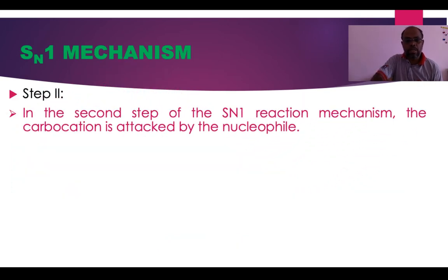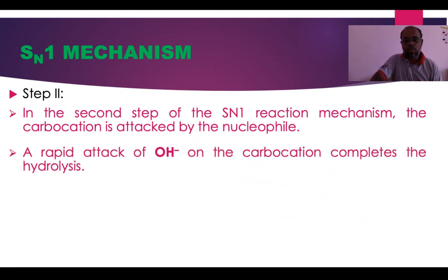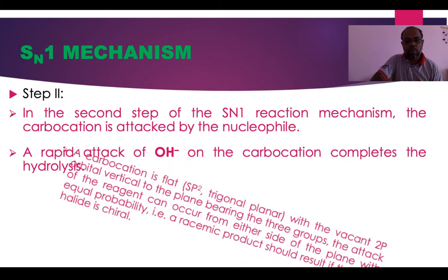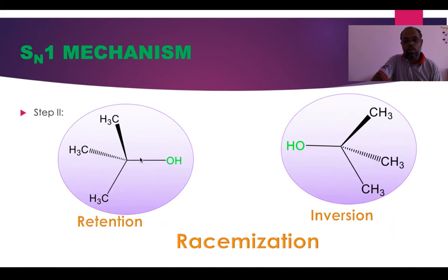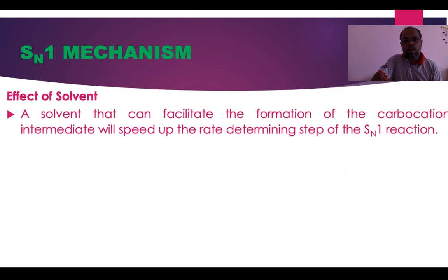After formation of the carbocation, it is attacked by the nucleophile. The hydroxide (OH⁻) nucleophile attacks the carbocation on both sides of the planar carbocation. The carbocation is trigonal planar and sp2 hybridized, and the nucleophile approaches the 2p orbital from both sides, forming a racemic product. The hydroxide approaches from one side and also from the opposite side.